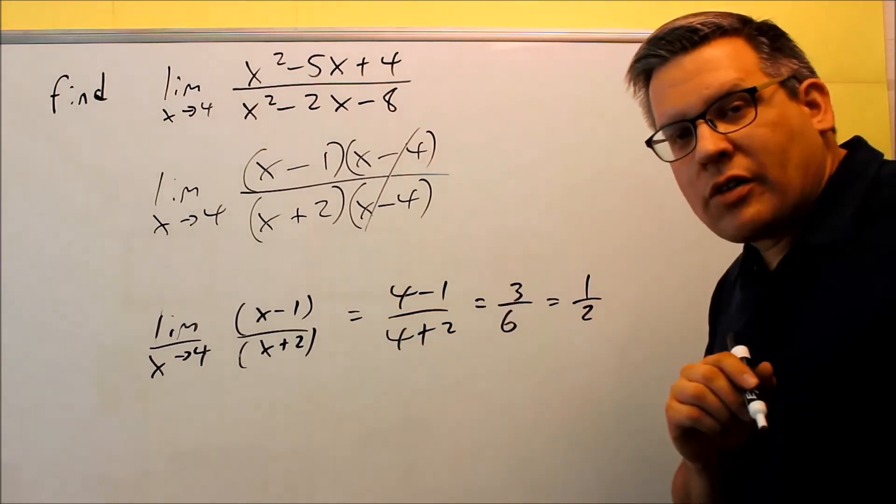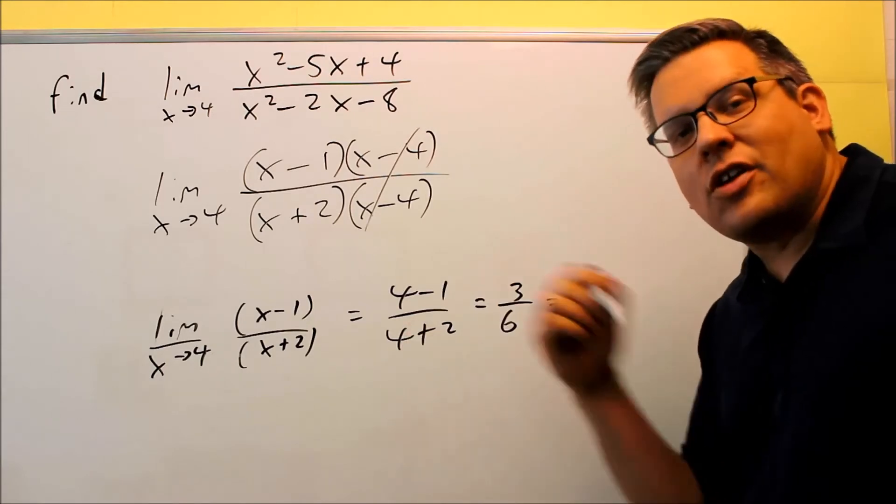So this one we were able to work out. So the question you might be wondering is, what if we cancel something out and it's still going to be undefined? We're going to talk about that in a later session. That's talking about limits going to infinity or negative infinity. Sometimes, no matter what, even if you cancel something out, sometimes you're still left with something where you get a 0 on the bottom, and we'll deal with that in a later session.